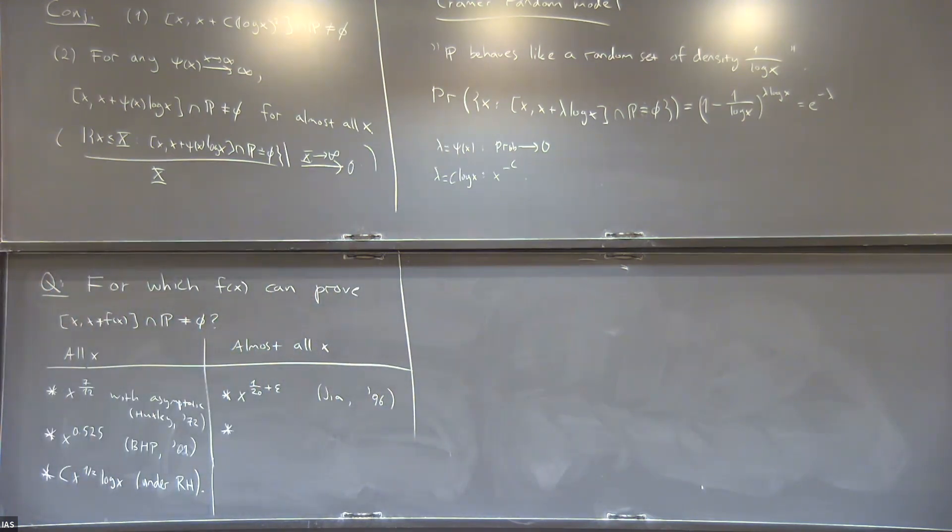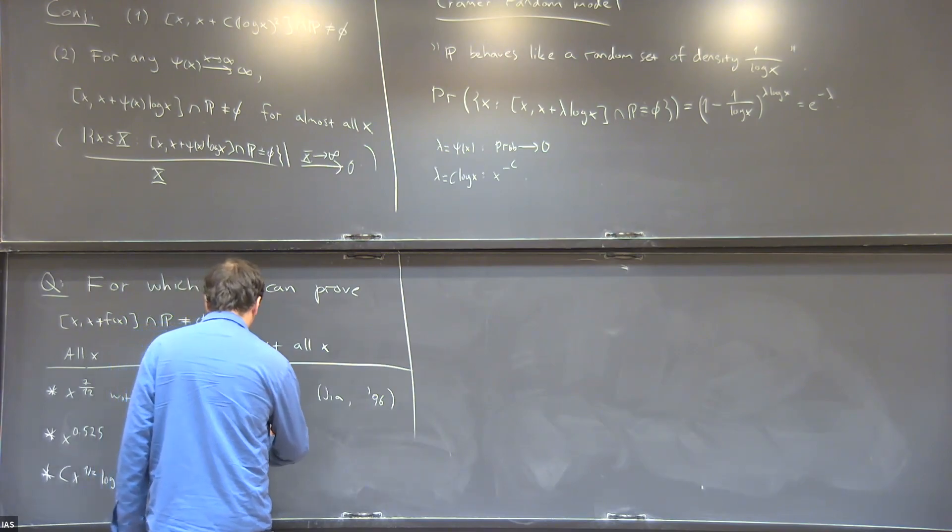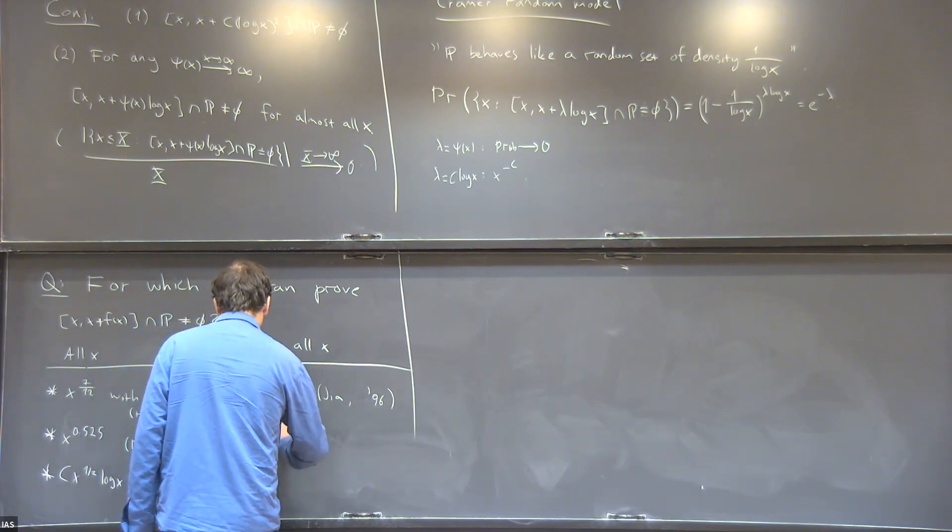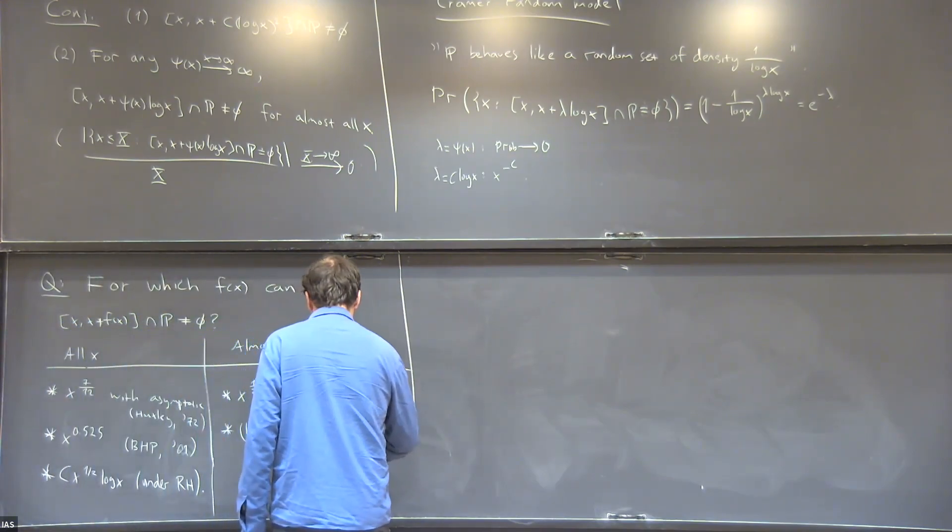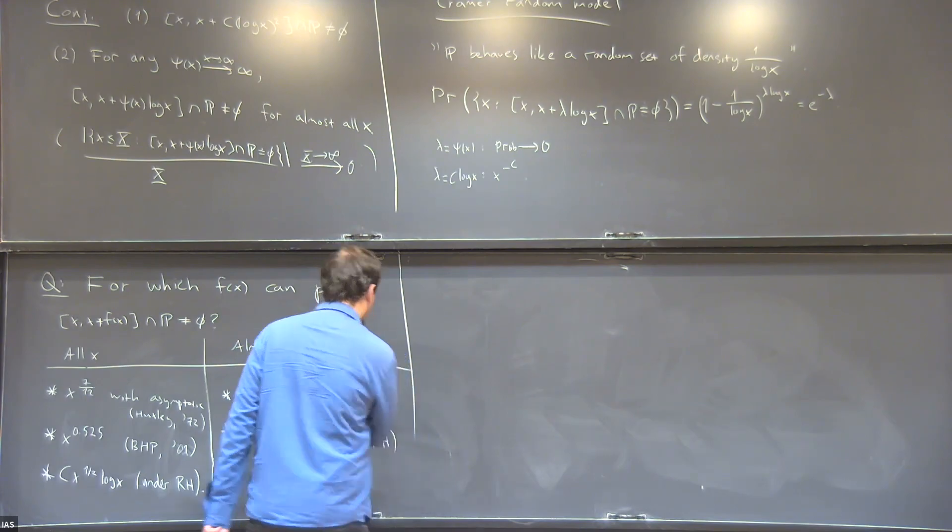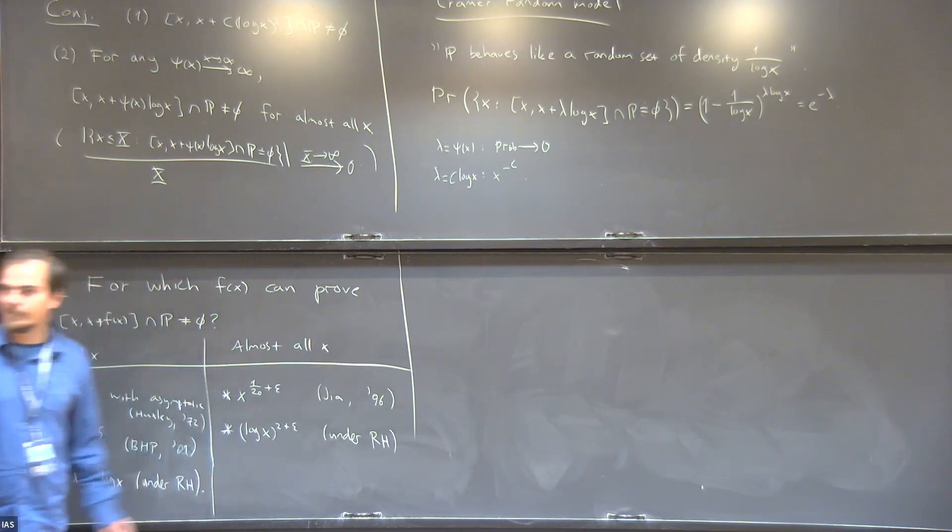Under the Riemann hypothesis, one can now get relatively close to Cramér's prediction. Intervals of length log X to the 2 plus epsilon, under the Riemann hypothesis. That's an old result of Selberg. He proved exactly this under RH.